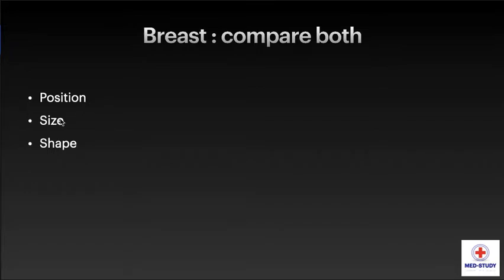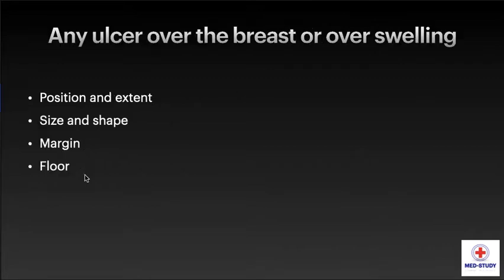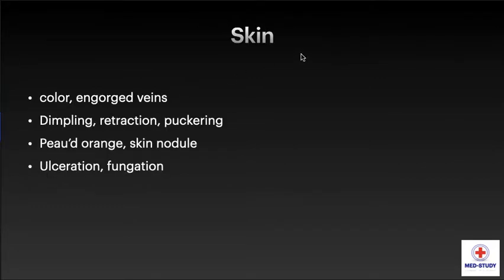We have to look for any swelling in the breast — its position in relation to breast quadrant, extent, size and shape of the swelling, surface and margin of the swelling, and skin over the swelling. We have to look for any ulcer over the breast or over the swelling — the position and extent of ulcer, size and shape, margin of ulcer, and floor of the ulcer.